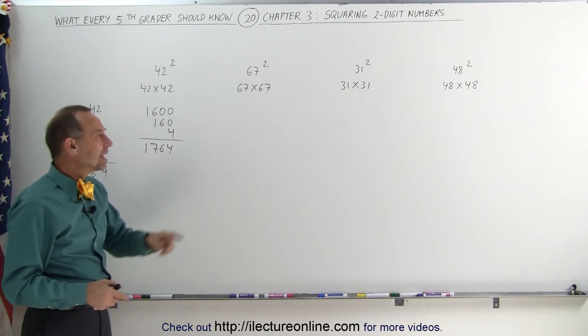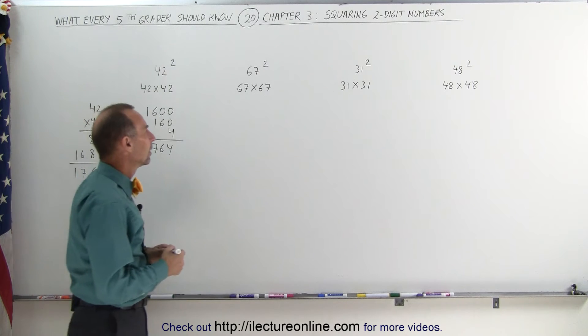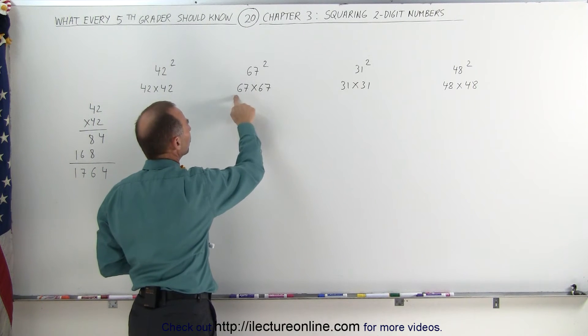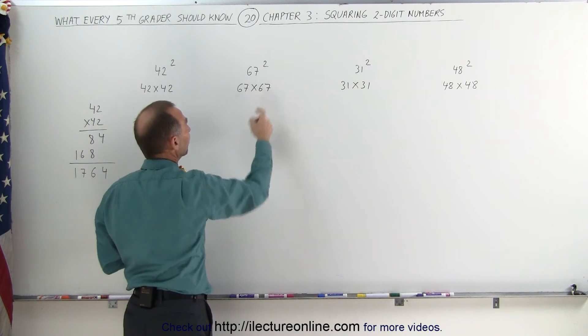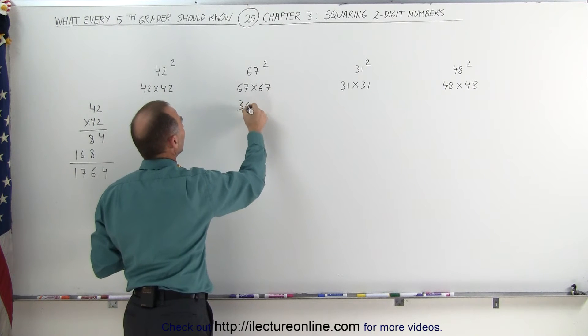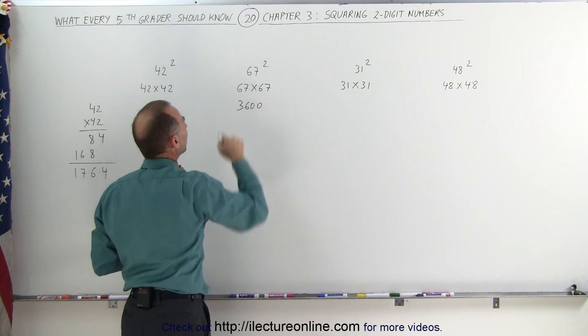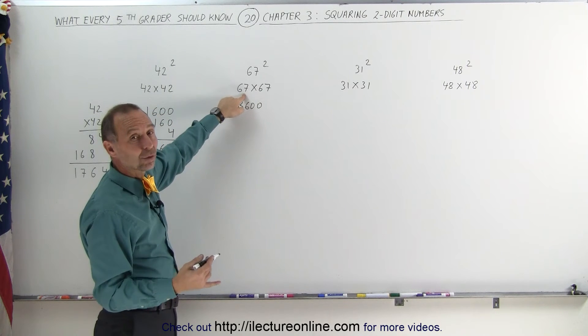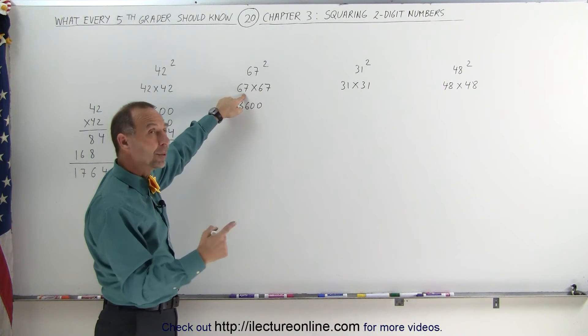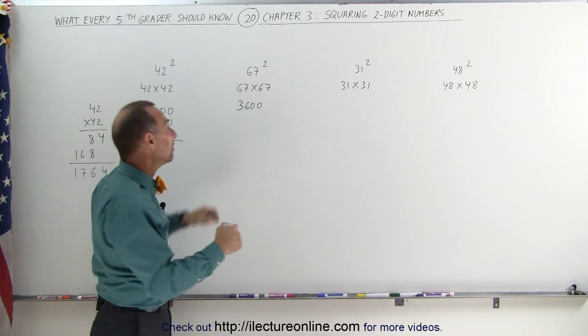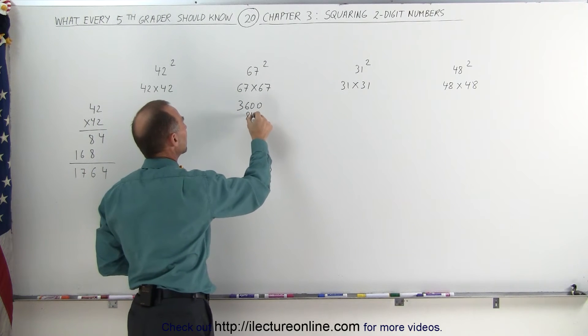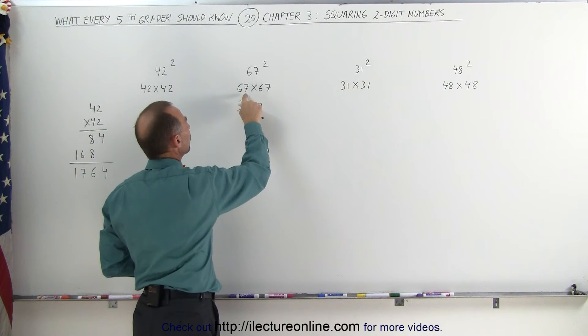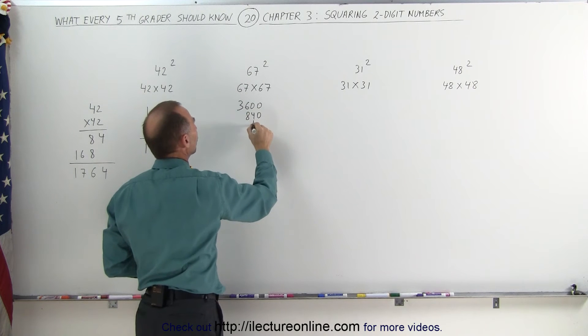Let's try that technique with something like 67. First, you multiply the first two numbers together. 6 times 6 is 36, add two zeros, so you get 3600. Now you multiply these two numbers together. 6 times 7 is 42. Add a zero is 420. Now you double that. Double 420, you get 840. Then you add that here. And finally, you add 7 times 7, which is 49.